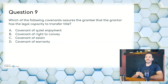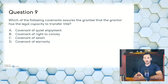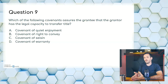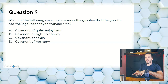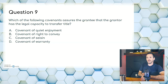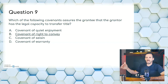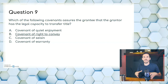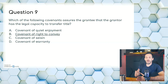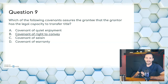Question nine: which of the following covenants assures the grantee that the grantor has the legal capacity to transfer title? A, covenant of quiet enjoyment; B, covenant of right to convey; C, covenant of seisin; or D, covenant of warranty. Quiet enjoyment is a promise that the new owner can live there in peace. Right to convey is the legal right to transfer — so B is our answer. Seisin is similar but simply says the owner owns what he says he owns, in less of a legal capacity.